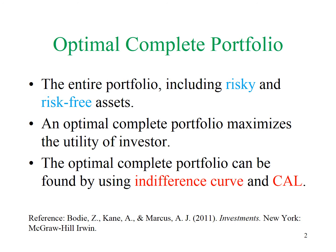An optimal complete portfolio refers to the entire portfolio. It consists of risky asset and risk-free asset. An optimal complete portfolio maximizes the utility of investors. The portfolio can be found by using Indifference Curve and Capital Allocation Line. Besides, we can also use formula to derive the optimal complete portfolio.